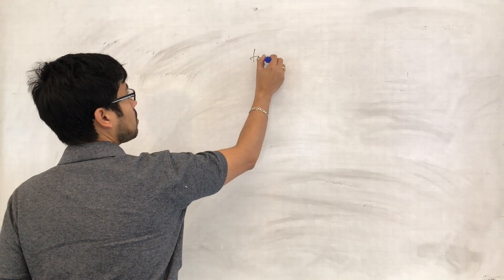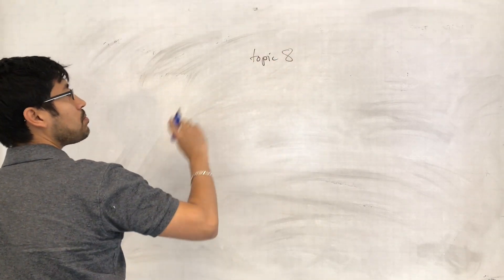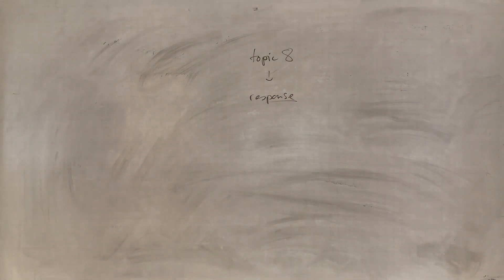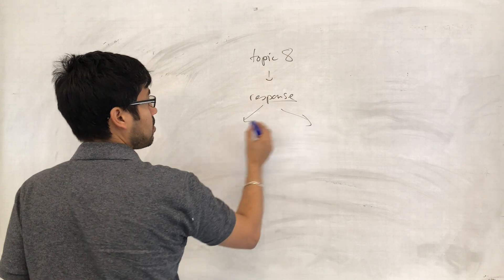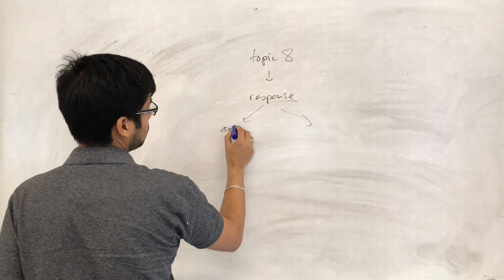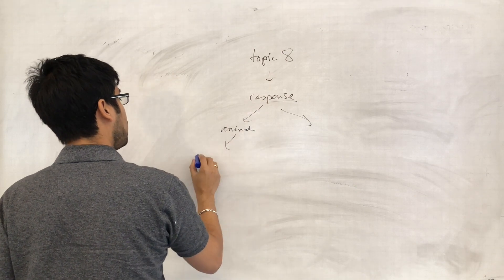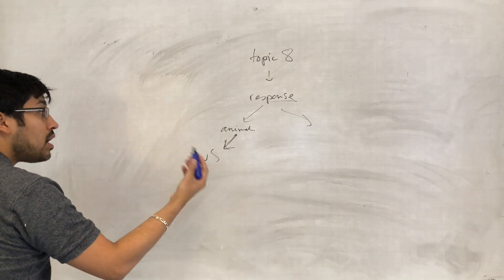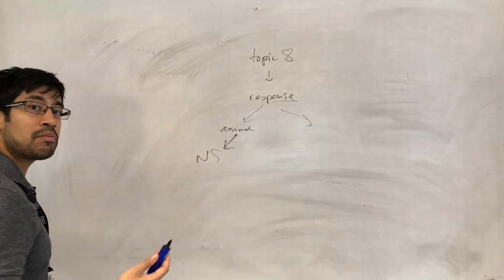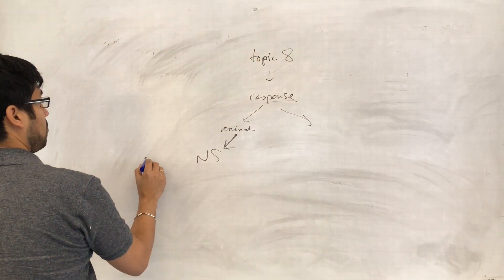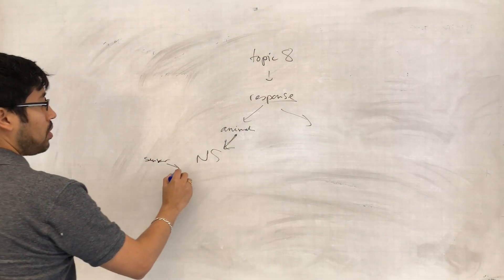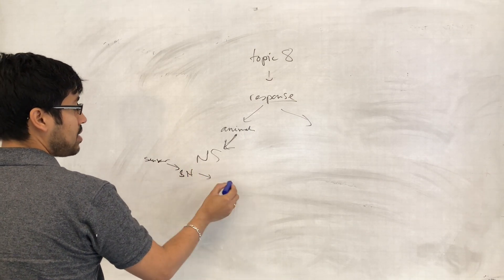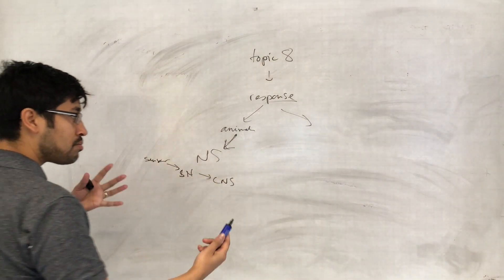Quick recap. Topic 8 is essentially about being able to respond to the environment. In mammals and animals, we have a nervous system, and that nervous system allows us to make responses to the environment because we have sensors that pass on information as impulses along sensory neurons. Sensory neurons take the information to the central nervous system where there's processing going on.